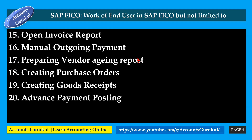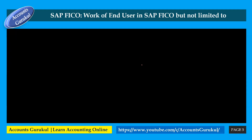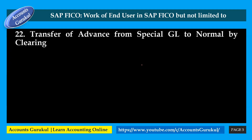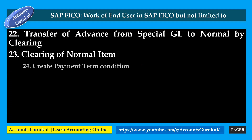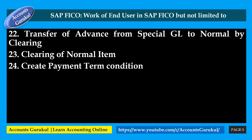Advance payment posting — if you are giving any advance payment to your vendors, how are you going to do the posting of that in the system? Automatic payment — if you want to run the automatic payment, how are you going to do that? Transfer of advance from special GL to normal GL by clearing — whatever advance payment you have done, how are you going to transfer it from special GL to normal GL by clearing?